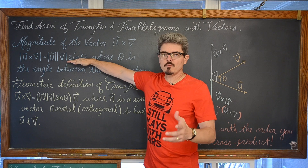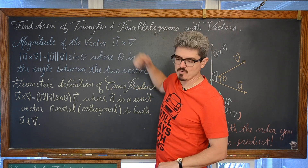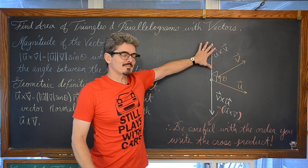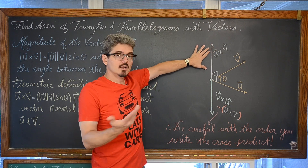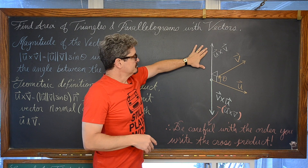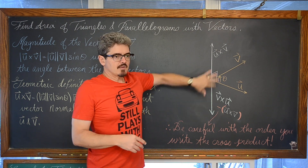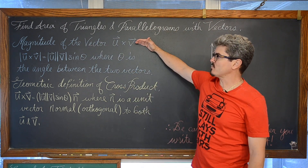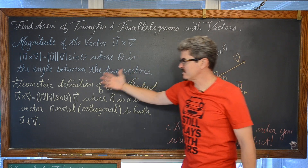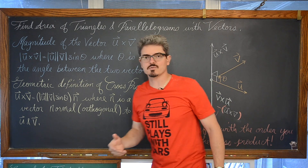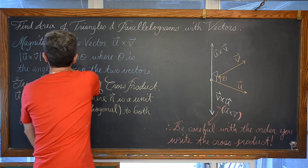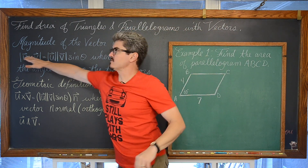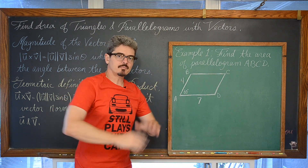The order in which you write vector u cross vector v versus vector v cross vector u changes your answer for the actual vector, but it will not change your answer for the magnitude. While this formula is presented as the magnitude of your vector cross product, it helps us develop the geometric definition, but it is not really something we use necessarily in homework too much. We are going to use this formula though — we are going to see part of this formula in our formula for finding the area of a parallelogram.